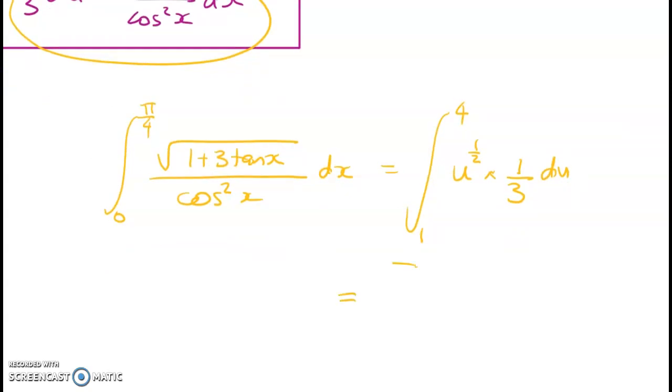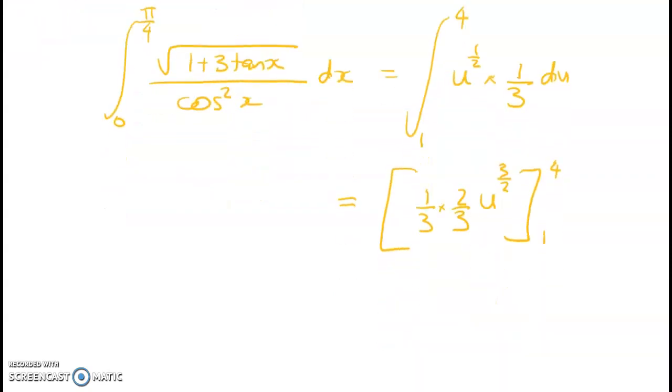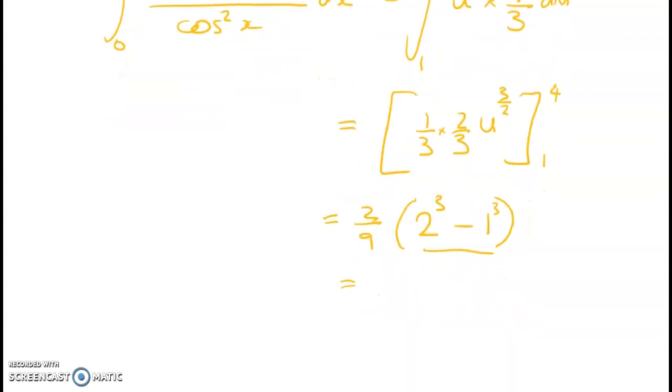Integrating that gives me 1 third u to the power of 3 over 2 and I need to times by the reciprocal which is 2 thirds. So that's between 4 and 1 giving us 2 ninths of, so 4 to the power of 3 over 2 is going to be 2 cubed minus 1 to the power of 3 over 2 is going to be 1. So this works out to be 7 and my final answer is 14 over 9.